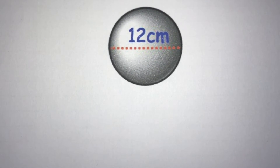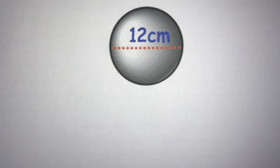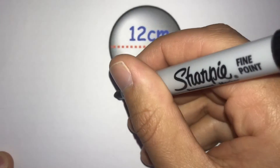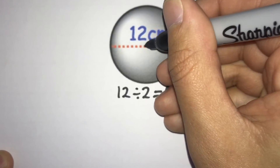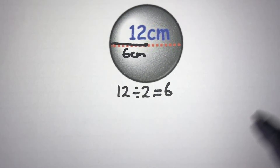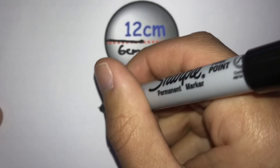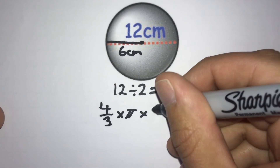One more question to have a go at. This time we have a measurement of 12 centimetres on the sphere — can we find the volume? Pause the video for a moment. This time the measurement goes all the way across, so we have the diameter, not the radius. We need to halve it: 12 ÷ 2 = 6. So our radius is 6 centimetres, and that's what we plug into the formula.